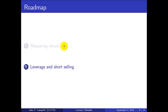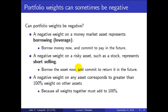The next topic is leverage and short selling. The common element is that portfolio weights can sometimes be negative. A negative weight on a money market asset represents borrowing or leverage — you borrow money now and commit to paying it back in the future. A negative weight on a risky asset such as a stock represents short selling: you borrow a risky asset you don't have, sell it in the marketplace, and must return it in the future, profiting if its price falls.